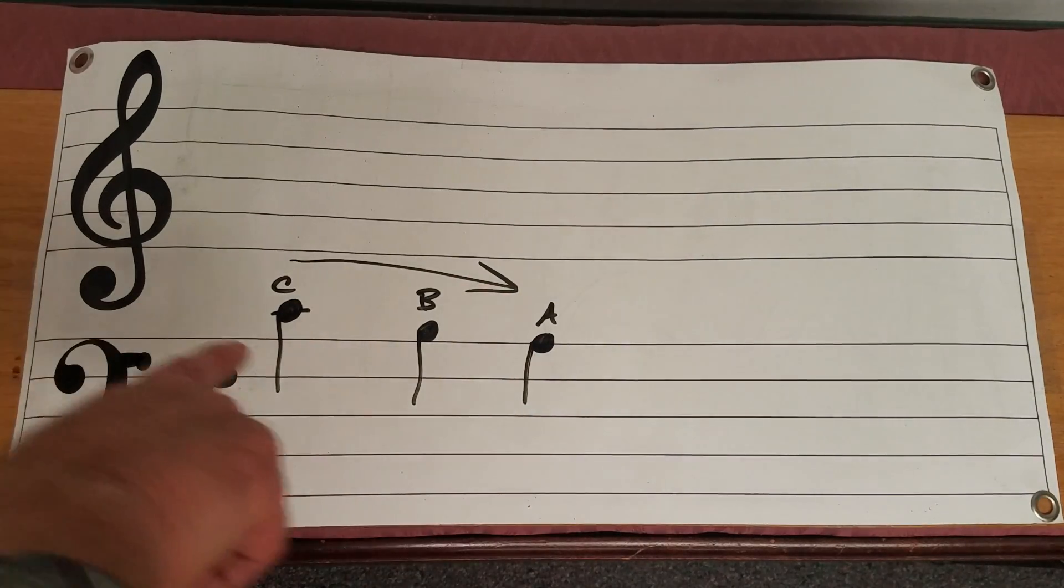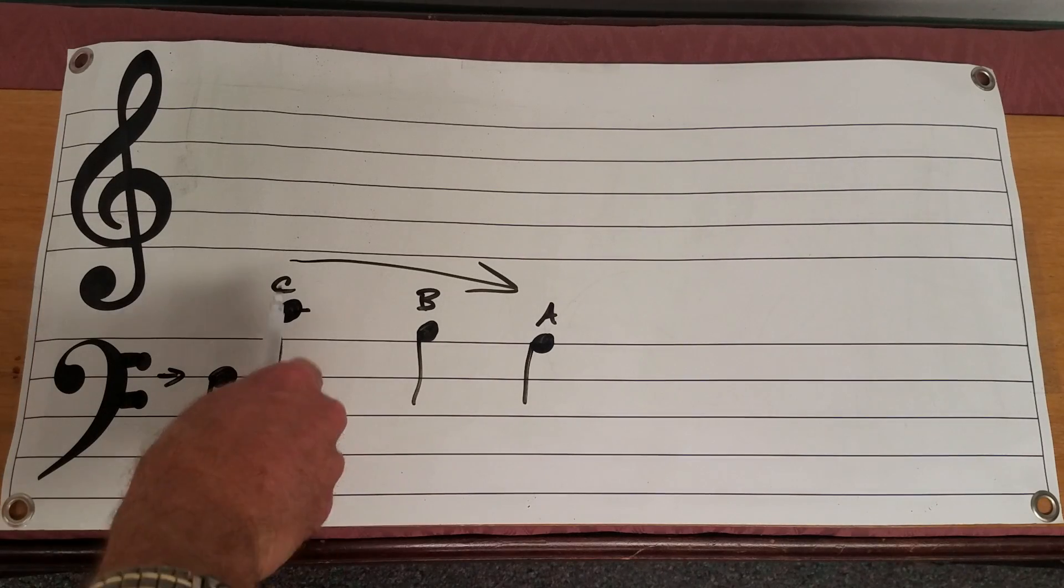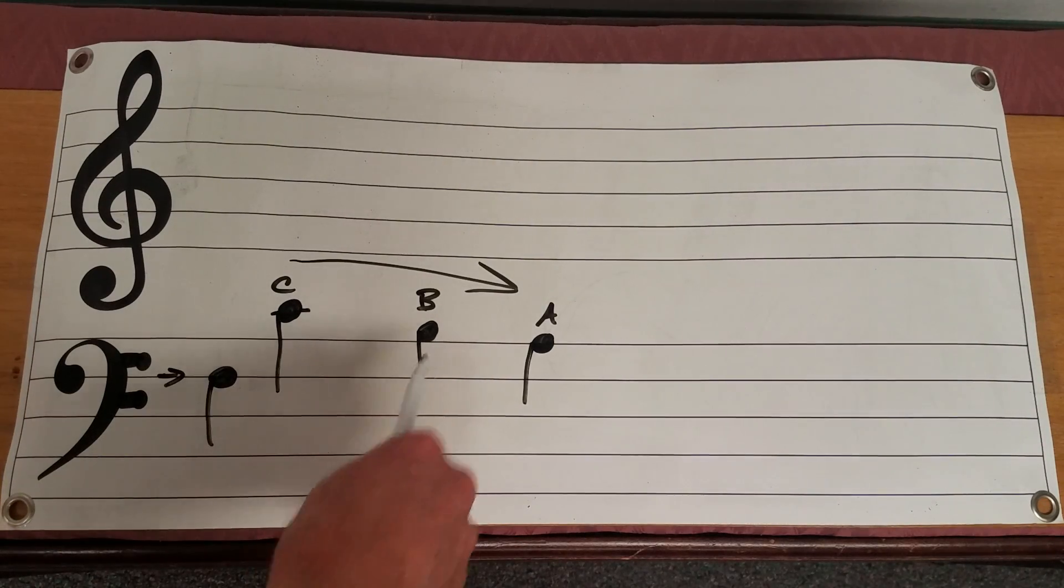And of course it goes in the line we call a scale. A scale can go up or down by step and it's simply going through the alphabet when it does this. So there again we have middle C, B, and A.